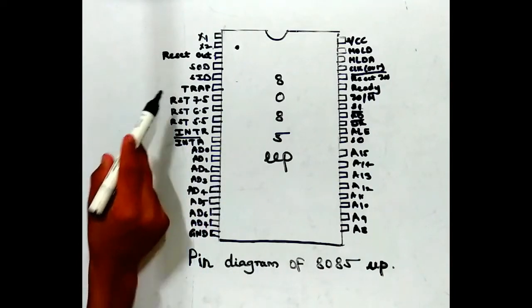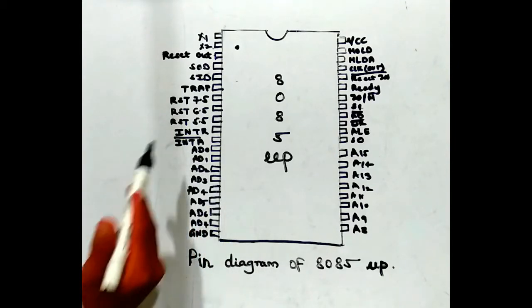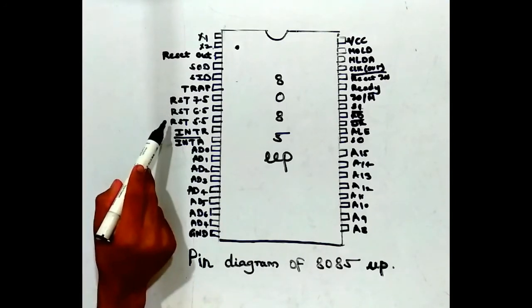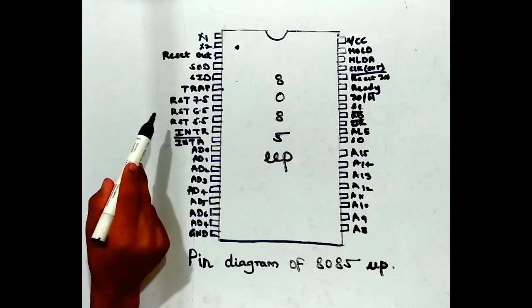The sixth pin is TRAP. This is an active high, edge-triggered, non-maskable, highest priority interrupt. The seventh, eighth, and ninth pins are RST 7.5, RST 6.5, and RST 5.5. These are active high maskable hardware interrupts.